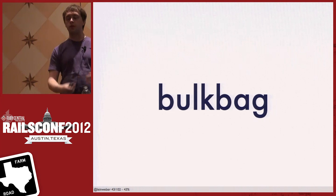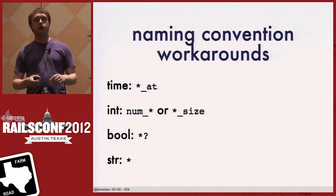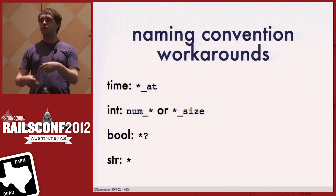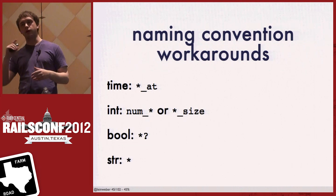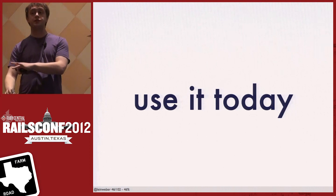HStore is pretty good, but you can't nest an HStore inside another HStore, and it's actually only strings — keys and values have to be strings. So we have a naming convention workaround: if we name a key ending in '@', we know in Ruby to parse it as a datetime; ends in 'size', we treat it as an integer; ends in '?', it's a boolean; everything else is just a string. It's okay, but not fully satisfying. Still, you can use it today.